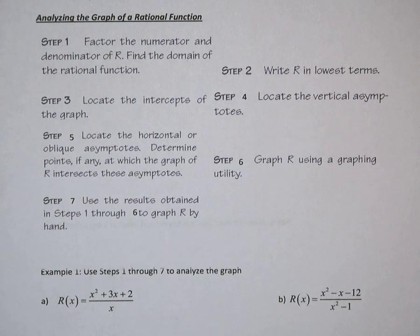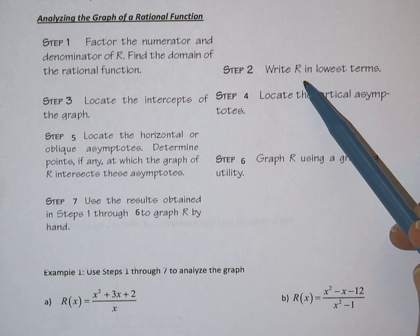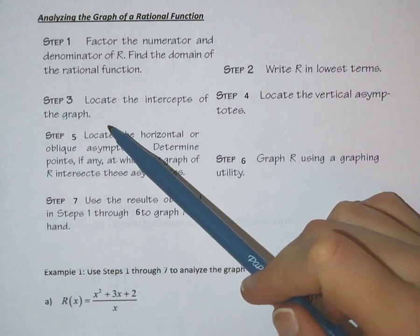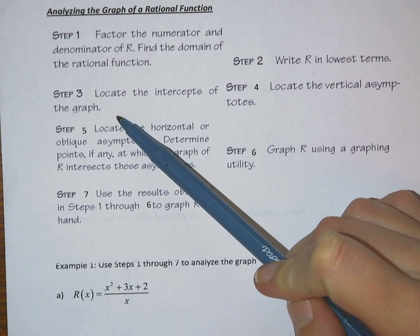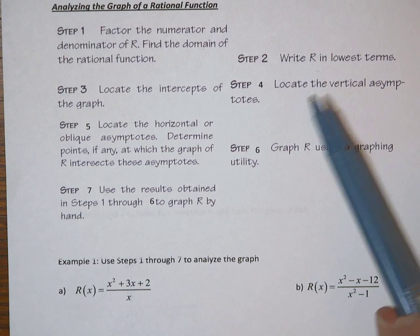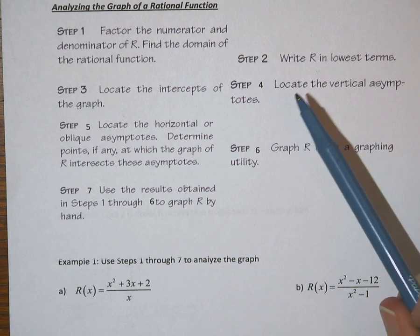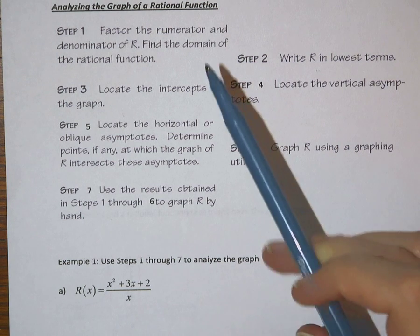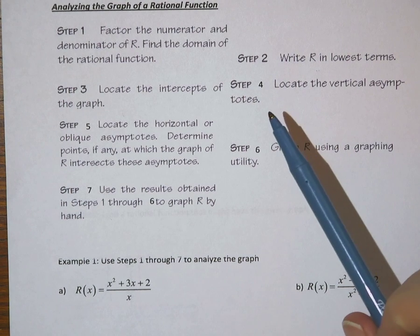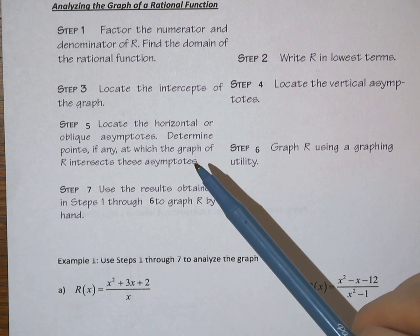We know how to do this. Step 2: we should be writing our rational function in its lowest terms, simplifying wherever possible. Step 3: we want to locate the intercepts, x or y, of the graph. Step 4: locate the vertical asymptotes. We've done this before, and we can find these using what we did in step 1 with finding the domain. Step 5: locate the horizontal or oblique asymptotes.